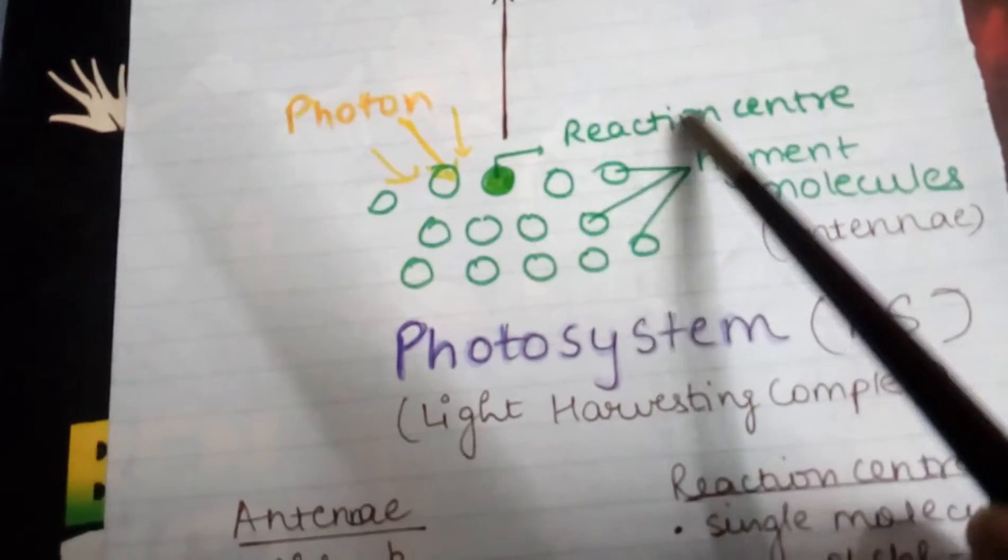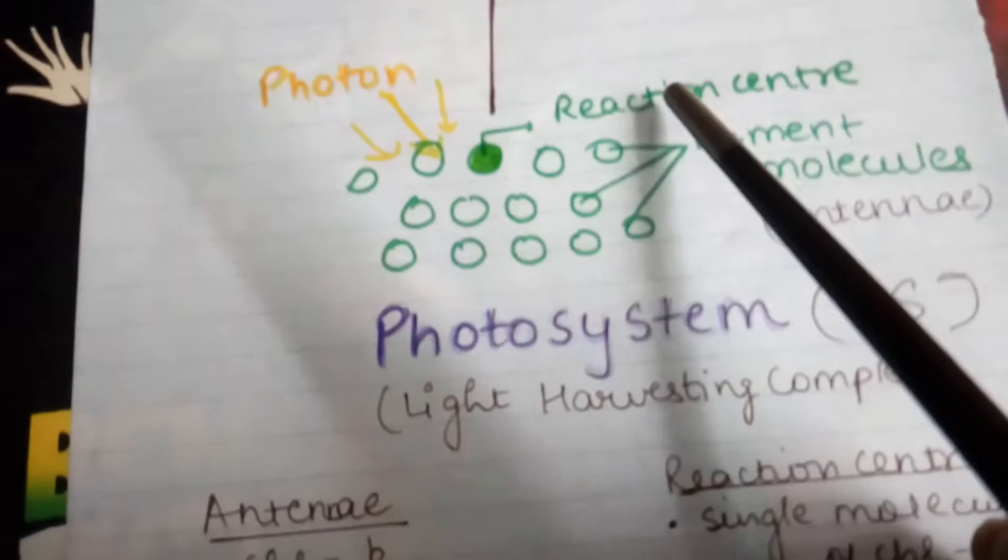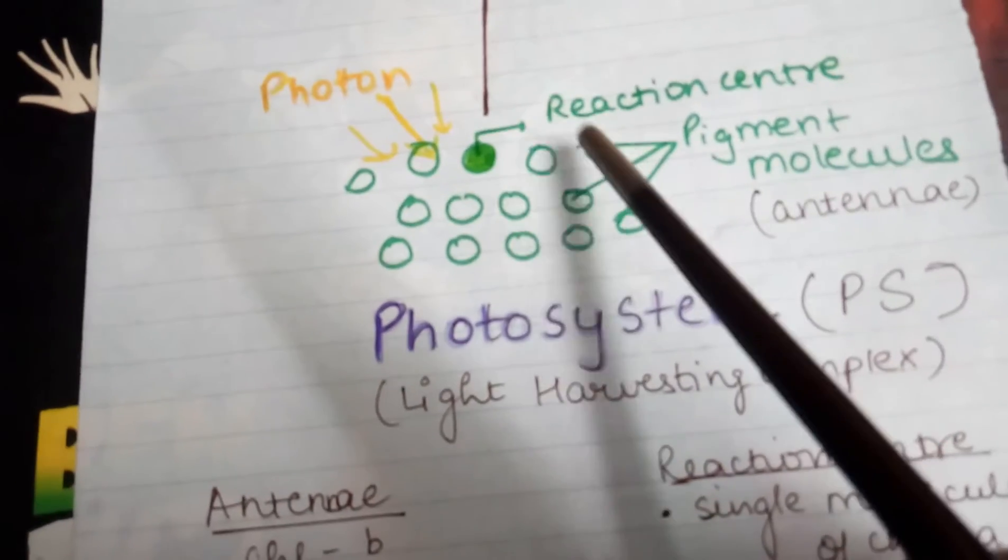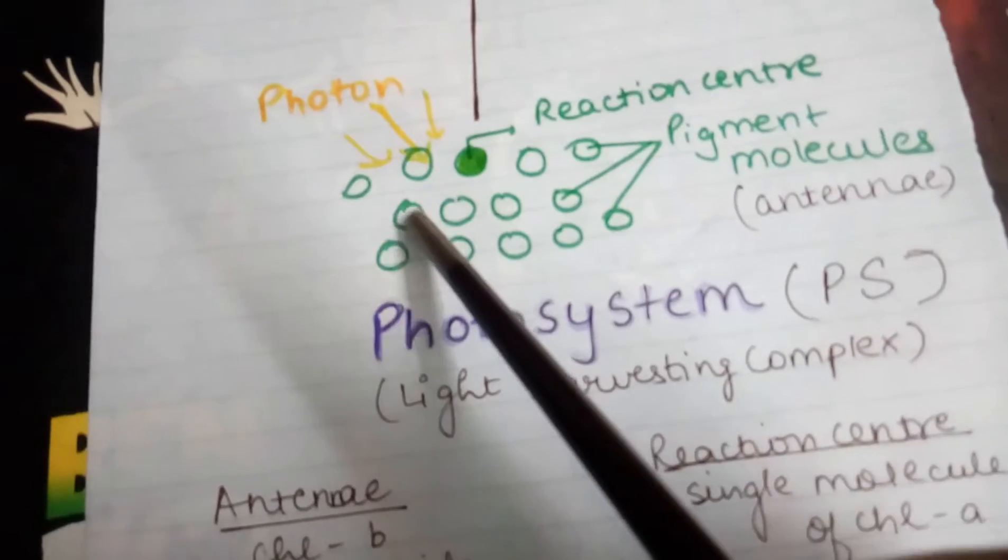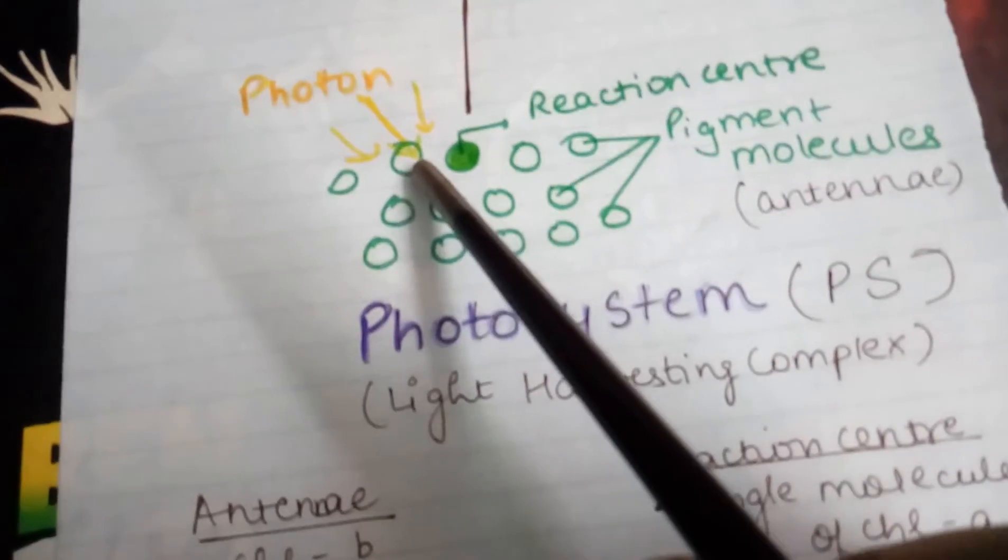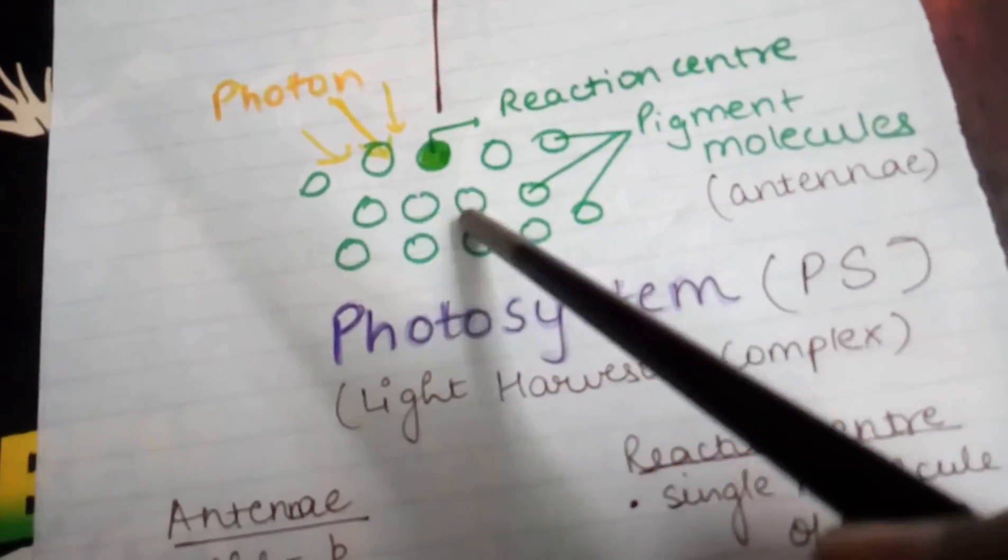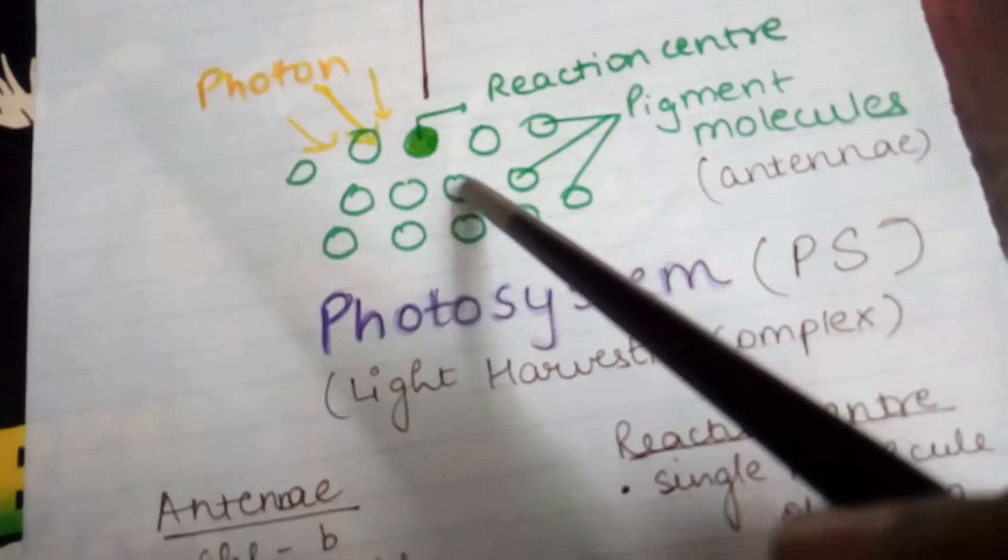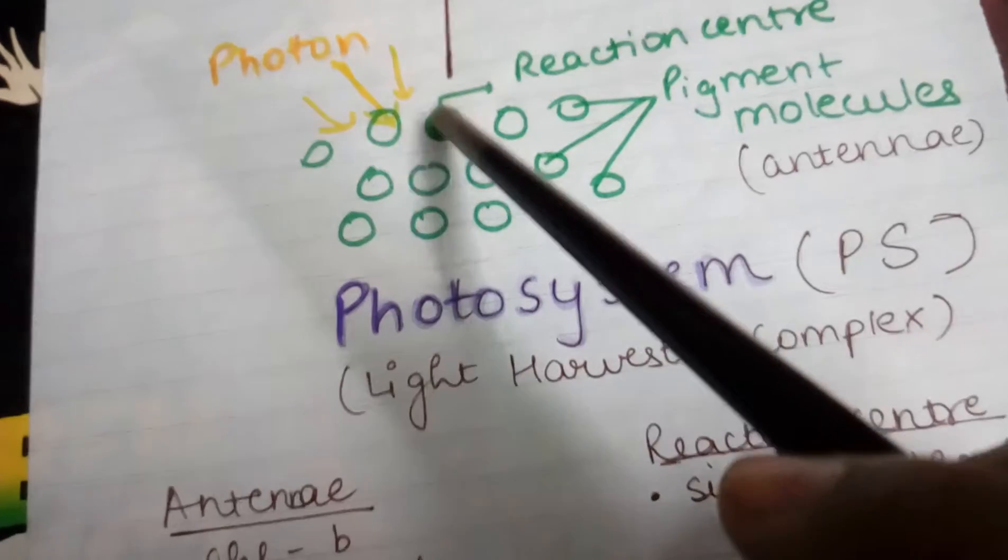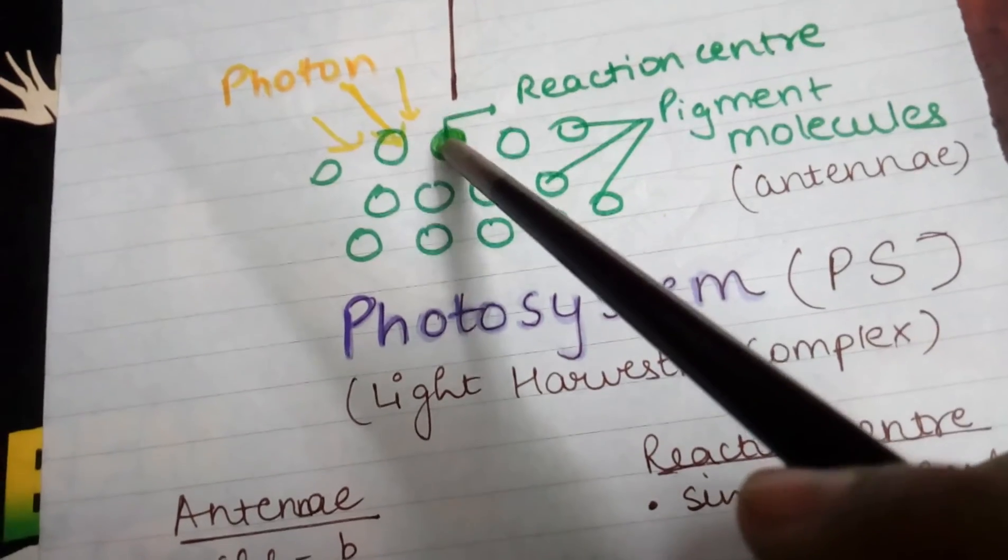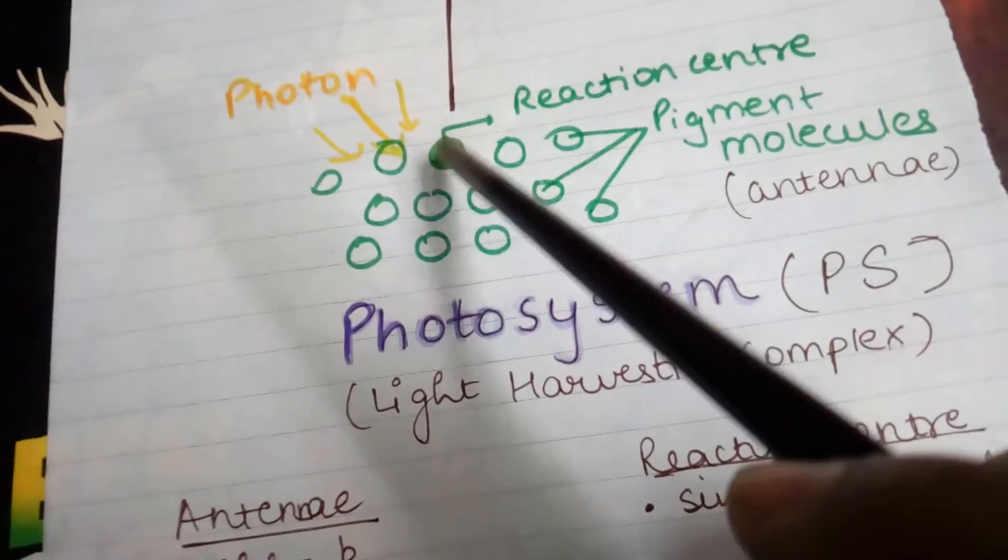Why is it called the reaction center? Because it's actually the center of every reaction taking place. These pigment molecules absorb light energy in the form of photons and transfer their energies to the reaction center. Thus, all energy is available to the reaction center, and everything that occurs happens from the reaction center.